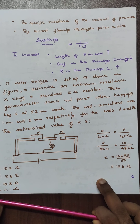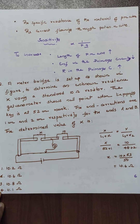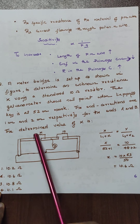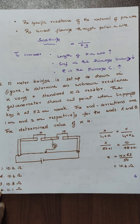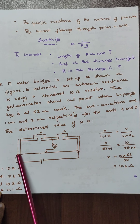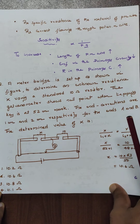We can go with some problematic situations. A meter bridge is set up to determine unknown resistance X using a standard 10 ohm resistor. The galvanometer shows a null point at 52 cm. The end corrections are 1 cm and 2 cm for ends A and B. With respect to X there is an end correction of 1, and for 10 it is 2. So X divided by 10 equals L1 plus correction X1 by L2 plus correction X2. Substitute and you get the answer — that end correction problem is a good question.